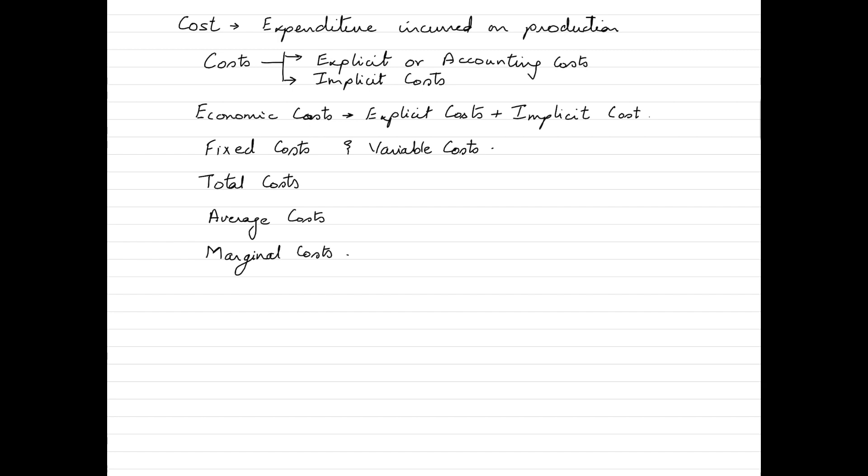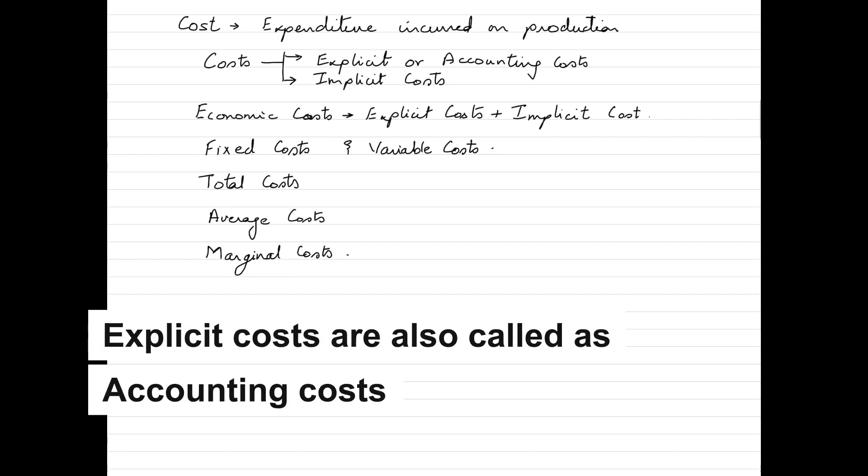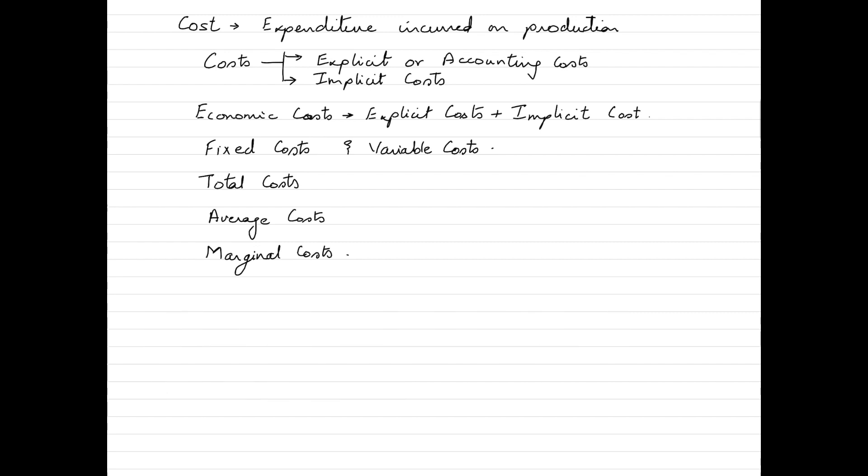In simple words, these are tangible out-of-pocket expenses that a firm incurs while conducting its business. Now explicit costs are also called as accounting costs because there's proper evidence available for these expenses that the businesses make.